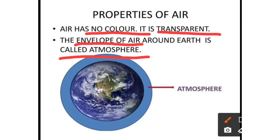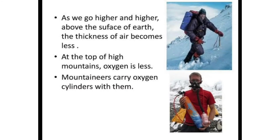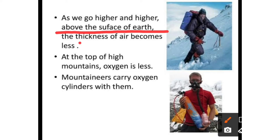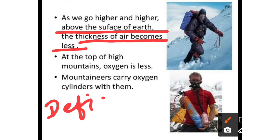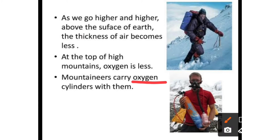The atmosphere is like a thick coating — like a blanket covering the earth at night. As we go higher above the surface of the earth, such as up mountains, the thickness of air decreases. There is deficiency of oxygen at higher levels. So we should carry an oxygen cylinder, because at the top of mountains, oxygen is less.